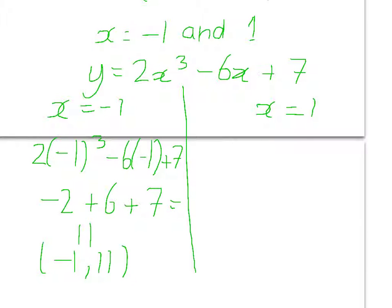And if we go down the x equals 1 line now, doing exactly the same. 2, 1 cubed minus 6 times 1 plus 7. So, 1 cubed is 1 times 2 is 2. 6 times 1 is minus 6 plus 7.